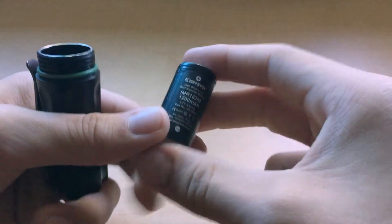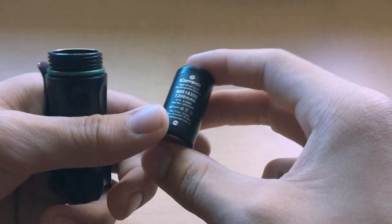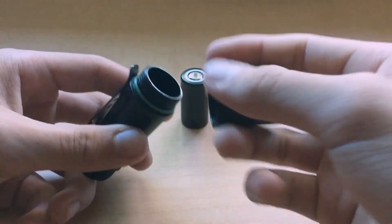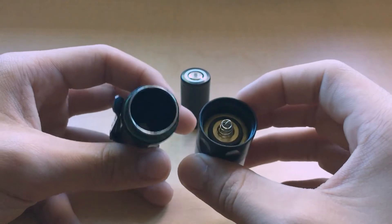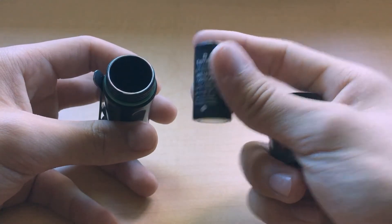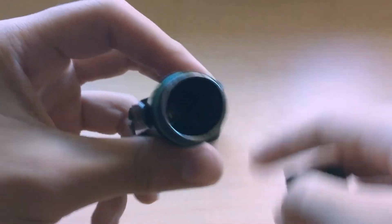You can see the 18350 battery it uses here. I've got a KeepPower in here, one of the latest gen ones, the 1200 milliamp hour ones. These are great capacity. Something I want to note is that the Boss is actually very flexible on the batteries it can take. It can take pretty much any 18350, and the reason for this is that it's double sprung.